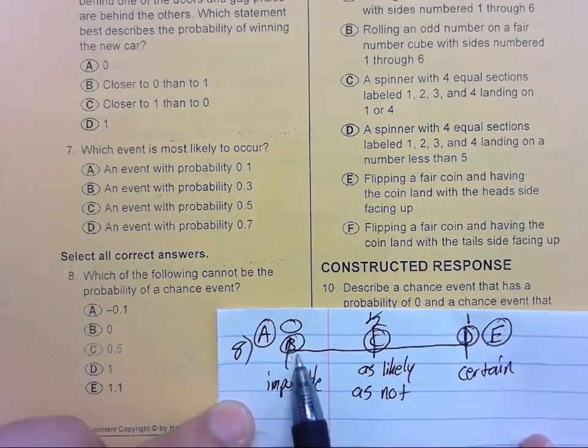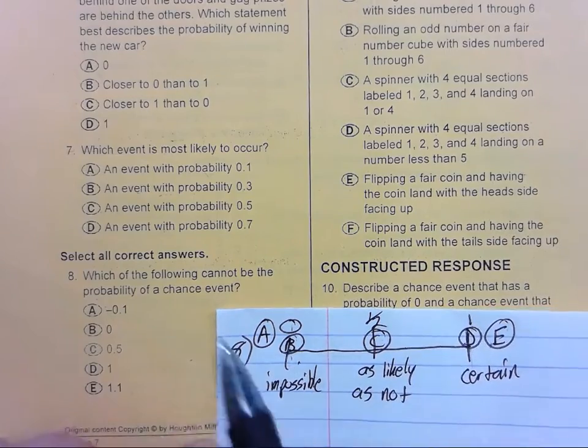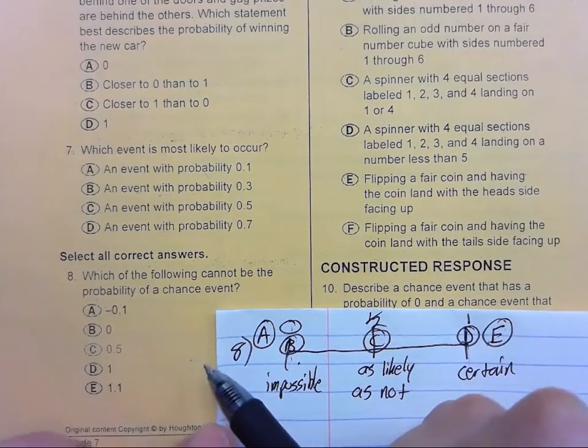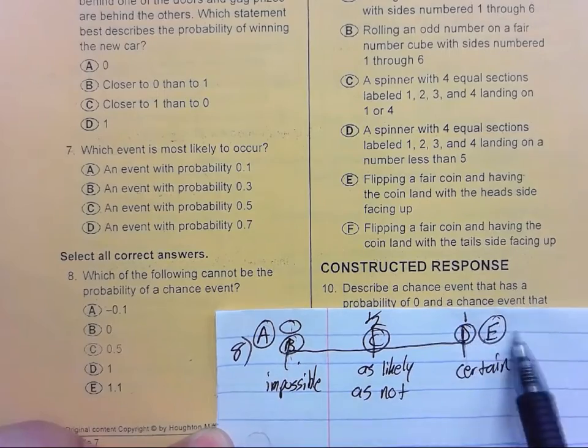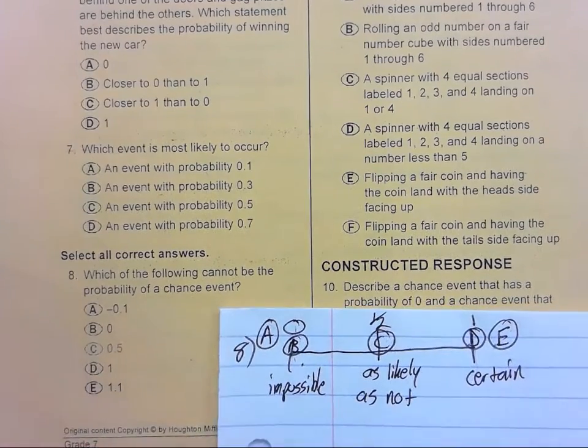So again, probability has to be between 0 and 1. Which of these are not between 0 and 1? A is outside. And E is outside. So the answers are A and E.